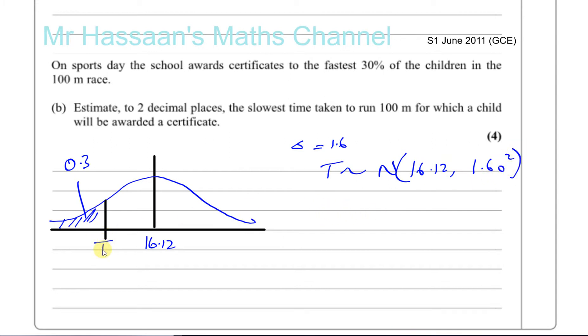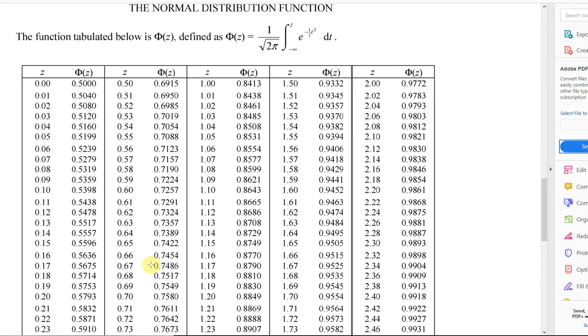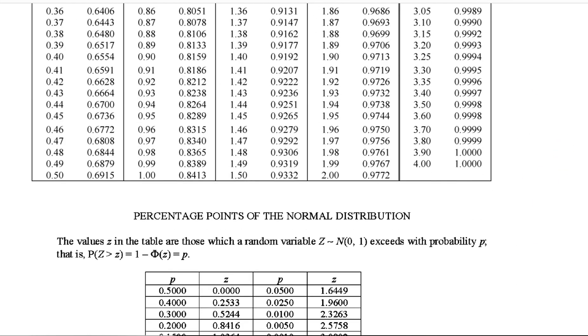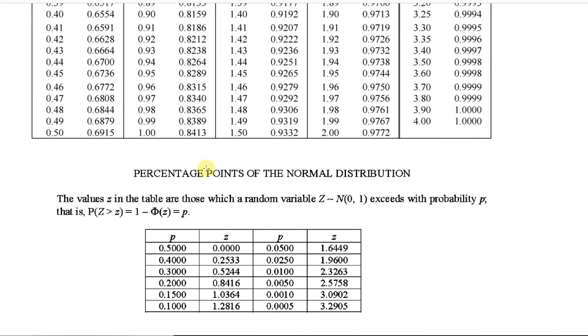So now we need to find what value we get here for the time. What we need to do first is we need to find what the z value is such that 0.3 is the area to the left of it. Now again, our table of values, if we go 0.3, I think we can find a value in the table which is underneath this table where we've got the probabilities and we've got the z values.